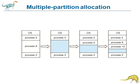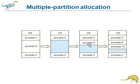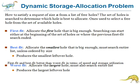In the diagram for multiple partition allocation, process 5 and process 2 are fixed-size partition processes, and process 8 is a variable-length process. When process 8 is freed, that space can be occupied by other fixed-size processes. Process 9 and process 10 show the remaining available space. The dynamic memory allocation problem will be explained in the next video.